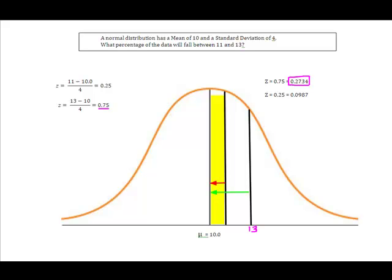It also tells me that for my smaller value of 11, which is right here, that Z score of 0.25, tells me that 0.0987% of the data falls between the value of 11 and the mean, which is represented by this red arrow, right here.